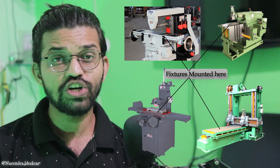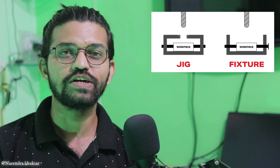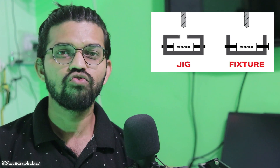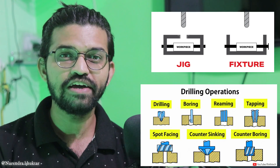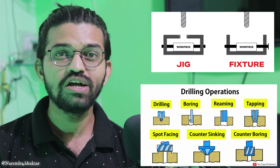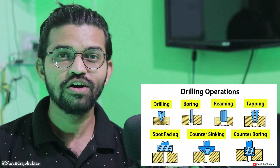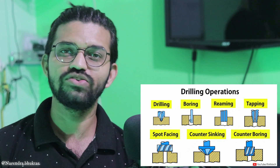Whereas in case of jigs, these are used for different operations like drilling, reaming, and boring. For all these operations you require jigs. So that was a basic fundamental difference between the jigs and fixtures.